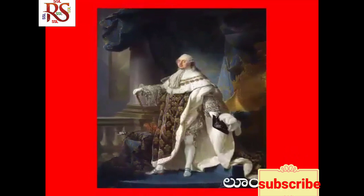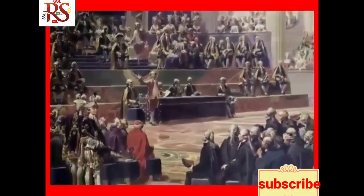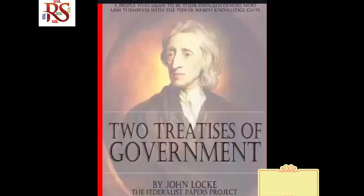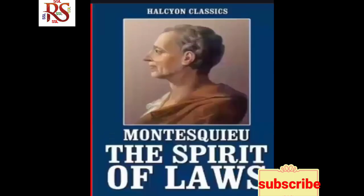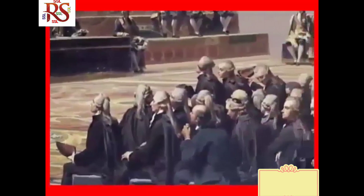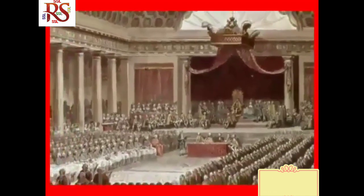A social group called the middle class came up in the 18th century. They earned wealth through overseas trade and were inspired by philosophers like John Locke and Jean-Jacques Rousseau, who wanted to create a society based on freedom and equal laws. In Two Treatises of Government, Locke wrote against the belief that the monarch had absolute rights. Montesquieu, a philosopher, proposed in The Spirit of the Laws that power should be divided between the legislature, the executive and the judiciary.